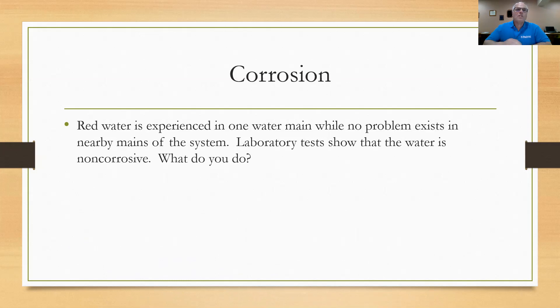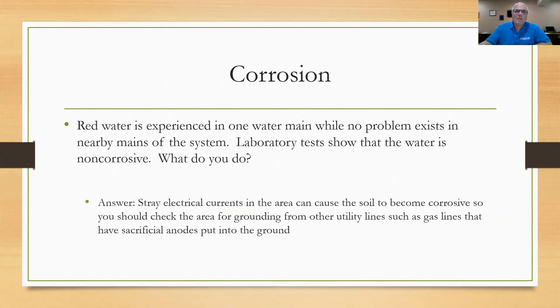Let's talk about corrosion. I asked you this question. I said red water is experienced in one water main while there's no problem existing in any of the nearby mains of your system. You take a sample and you run it to the laboratory and they tell you the water is non-corrosive. So what do you do? Think about that. I'm going to give you the answer on the same slide. You reason that stray electrical currents in the area can cause soil to become corrosive. So you should check the area for grounding from other utility lines, such as gas lines that have sacrificial anodes put into the ground. These other utilities put their pipes in the ground. They don't want them to corrode. They put sacrificial anodes. They put electricity into the ground and those stray electrical currents can actually corrode your pipe if you have weakness in the pipe wall. So that's the thing you want to look for if no problem exists anywhere else.